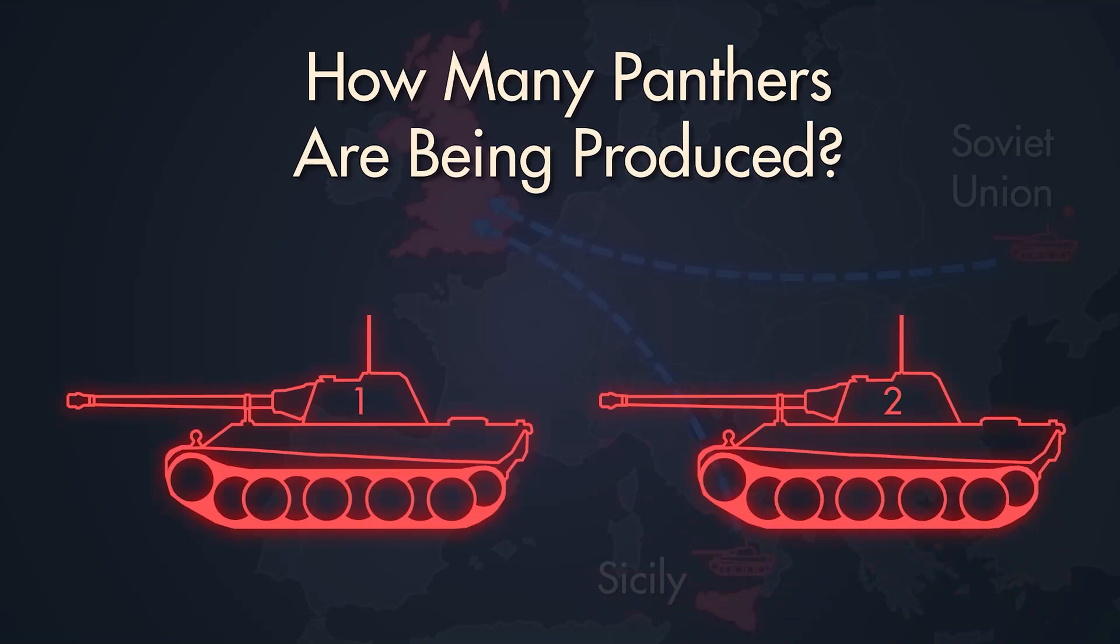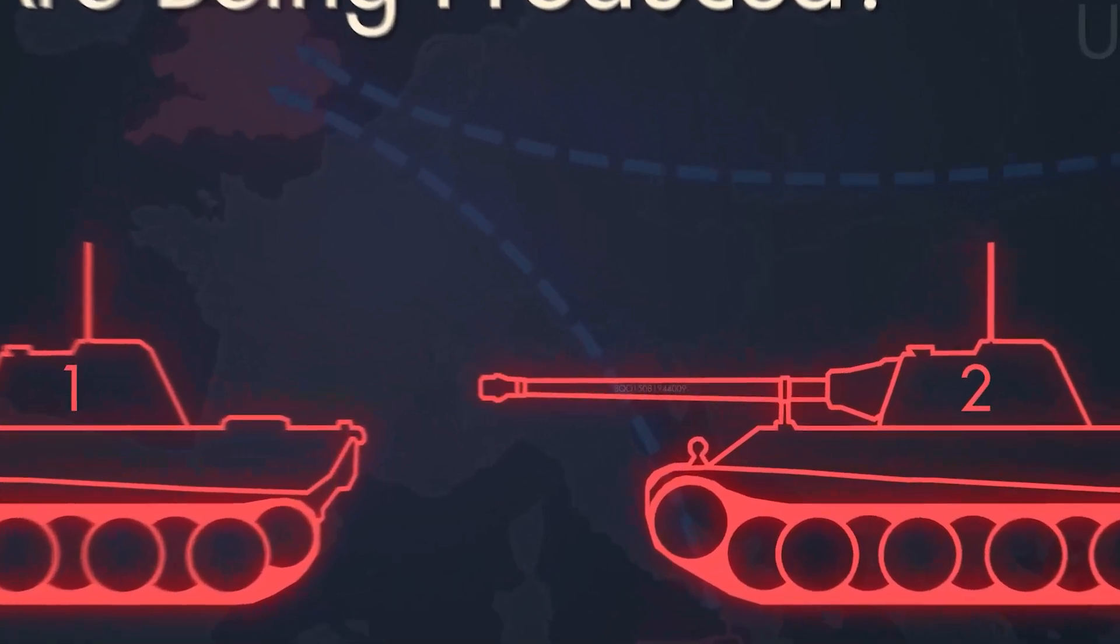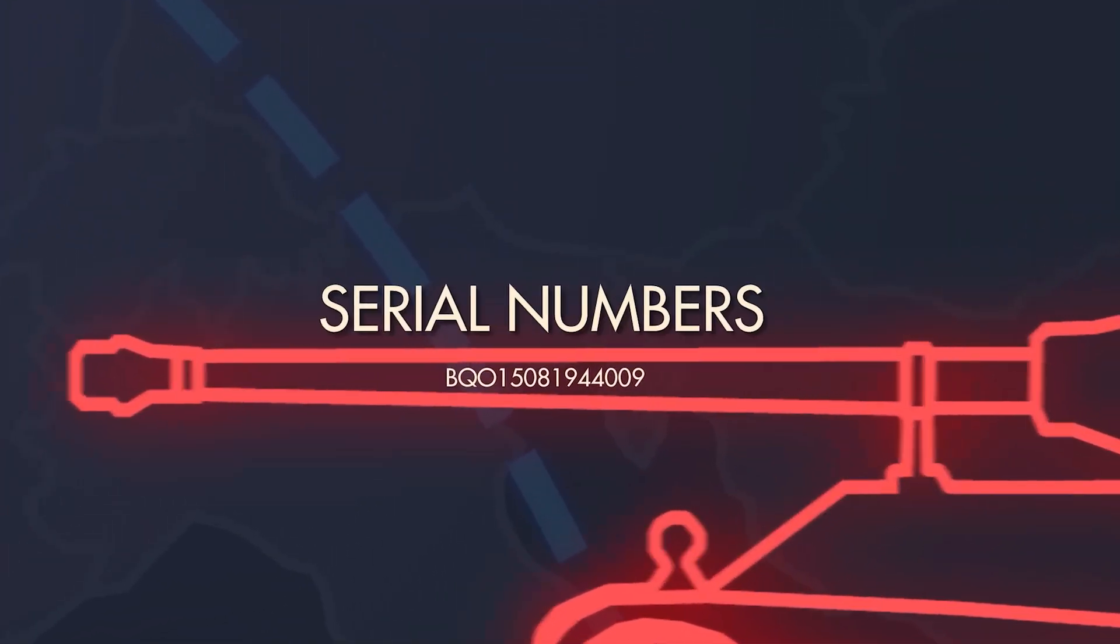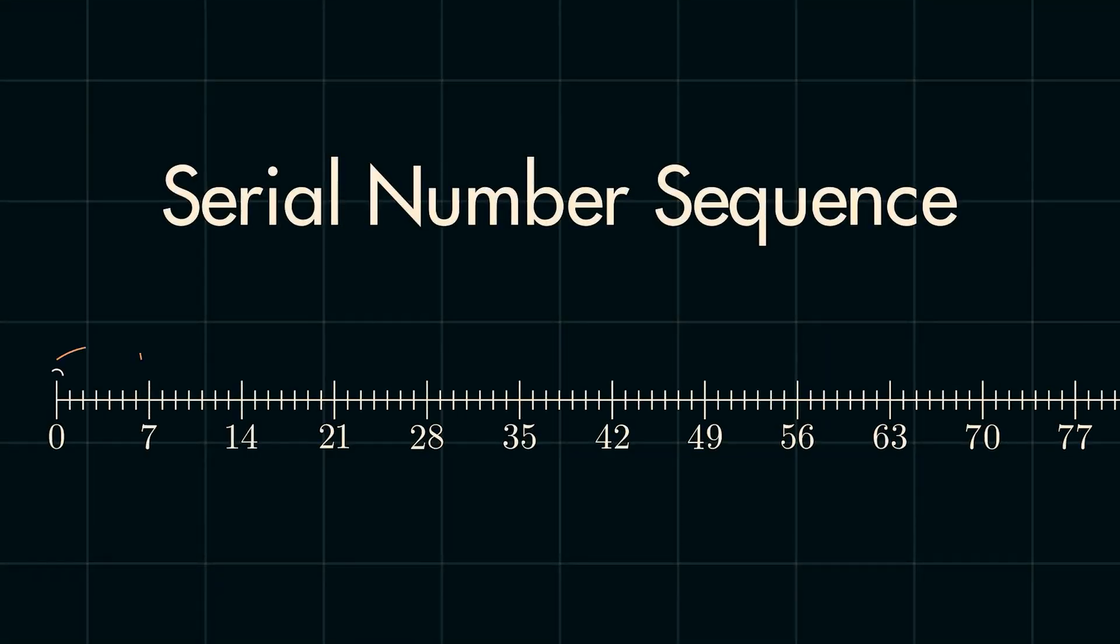But the statisticians had one trick up their sleeve, one that could be found hidden away on almost every piece of Nazi equipment, weaponry, and vehicles. Serial numbers. The Germans, logically, used serial numbers with regular sequences, but the seemingly unremarkable choice would end up being exploited heavily by the Allies.